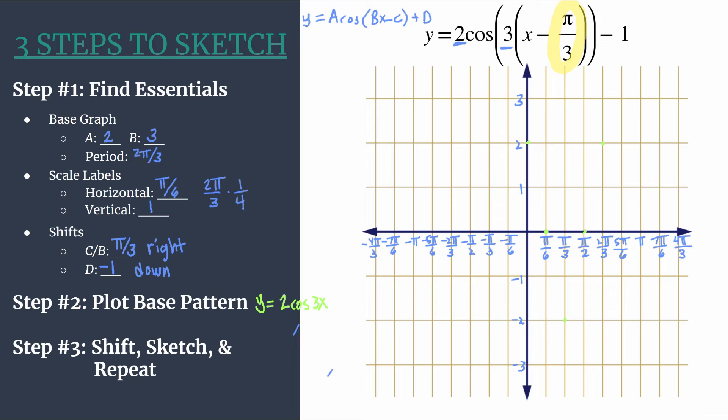So in step three, we shift, sketch, repeat. Our shifts, we can really do at the same time. We're going to move each of these green intermediate points from our base pattern in step two, and we're going to move them right pi over three and down one. So again, pi over three is equal to two grid units horizontally here. And we counted by ones vertically.